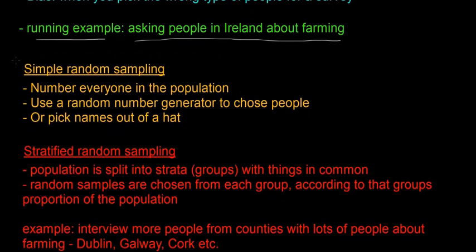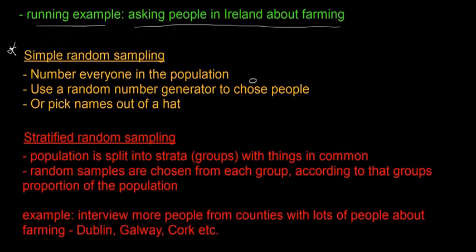First, we'll look at simple random sampling. This is the easiest one. It's where you number every single person in the population, then you use a random number generator — a computer that comes up with random numbers — to choose people. Another way is to pick names out of a hat. This is probably the most random method, but it can also be difficult and expensive if people are really spread out, such as one person at the bottom of Cork, one in Galway, one in Dublin, one in Donegal.